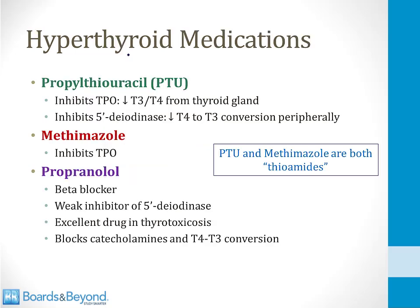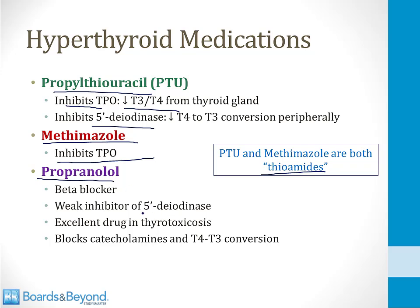Many hyperthyroid medications inhibit either TPO or 5'-deiodinase. Propylthiouracil, or PTU, inhibits TPO — blunting formation of T3 and T4 from the thyroid gland — and also inhibits 5'-deiodinase, blunting conversion of T4 to T3. Methimazole inhibits only TPO. Both PTU and methimazole are thioamides, which inhibit thyroid gland production of thyroid hormone. The beta blocker propranolol is a weak inhibitor of 5'-deiodinase, making it an excellent drug for thyrotoxic patients — it blocks catecholamine effects and blunts peripheral conversion of T4 to T3.